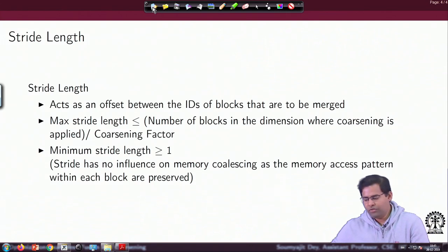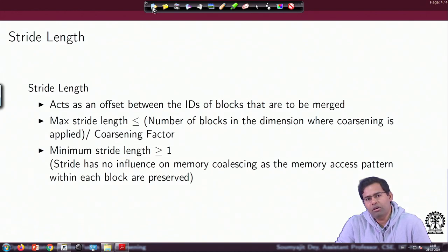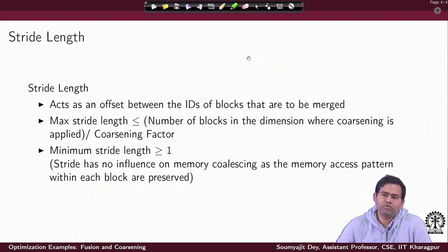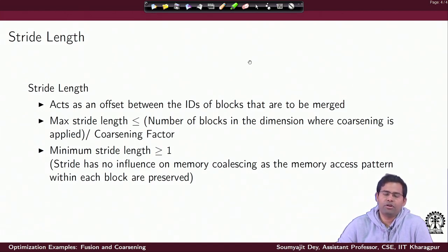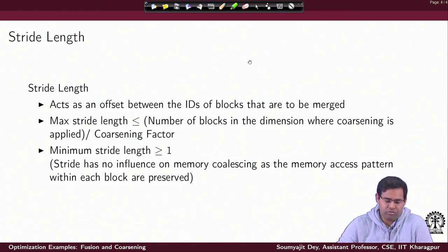Since we are now using threads from different thread blocks, the stride will have no influence on memory coalescing. The original memory access pattern within the blocks is always preserved. Warps are formed with threads from inside a block, and since coarsening is across blocks, the original warp-level memory coalescing behaviour — the global memory transactions — does not really change.